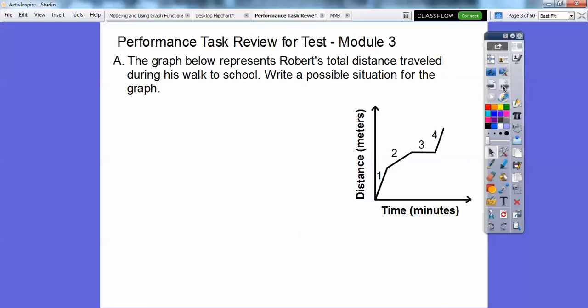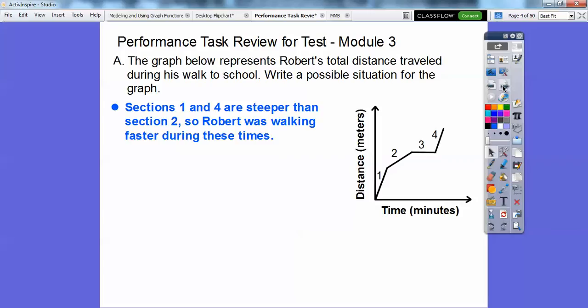This probably means that he stopped and maybe talked to some friends and then he started walking to school fast again right there. So parts 1 and 4 are steeper than section 2. So Robert was walking faster during these times. The steeper it is, the faster he's going to school. So section 3 is horizontal. So Robert wasn't moving during this time right here.